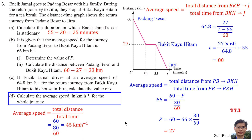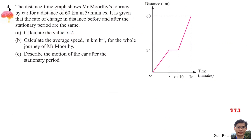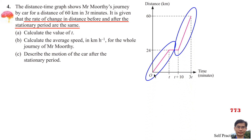Question 4: The Distance-Time Graph shows Mr. Multi's journey by car for a distance of 60 km in 30 minutes. It is given that the rate of change in distance before and after the stationary period are the same. We label the points as P, Q, and R on the graph.